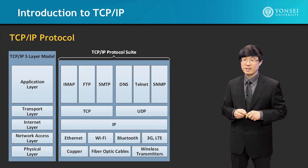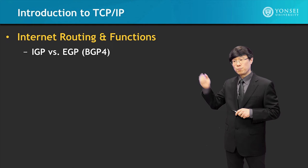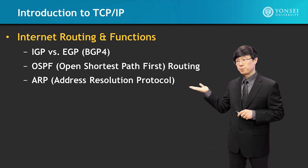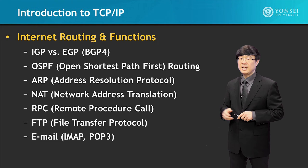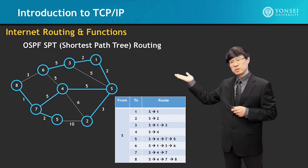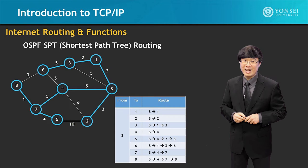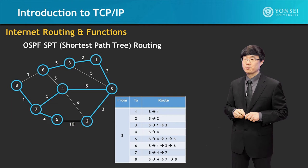In the next chapter about Internet Routing and Functions, we'll study about IGP and EGP, which include BGP4 protocol. We'll study about OSPF routing technology, then ARP, NAT, RPC, FTP, and email technology. One of the things we'll study is OSPF shortest path tree routing, which is the routing technology used in the Internet. You've been using it your entire life — you might as well know how it actually works.